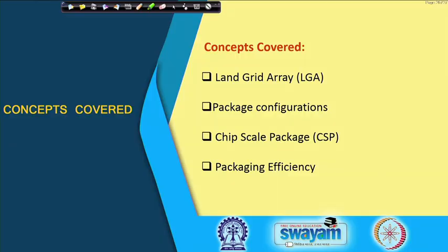Welcome back to the course on Electronic Packaging and Manufacturing. We have talked about ball grid array packages in the last lecture. Today we will look into the next type of area array package called the LGA or land grid array. We will start with land grid array, then talk about other package configurations, and finally cover chip scale package and packaging efficiency.